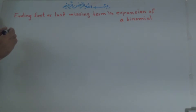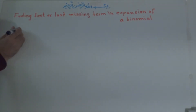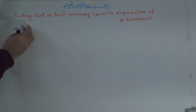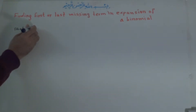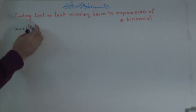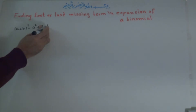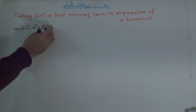We have a binomial: a plus b to the power of 2 is equal to a to the power of 2 plus... question mark.